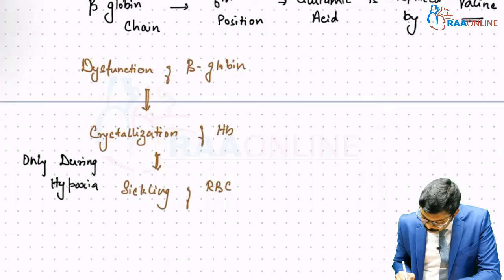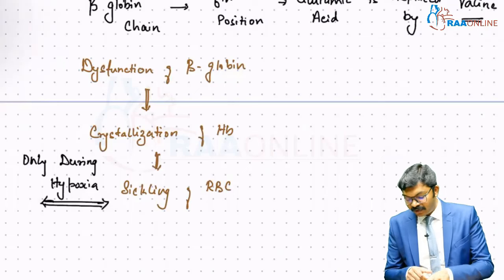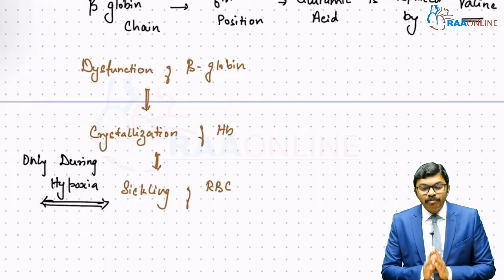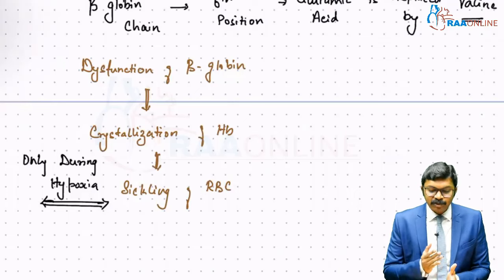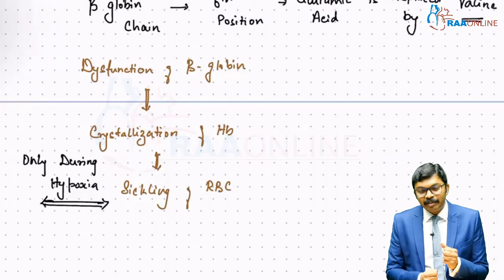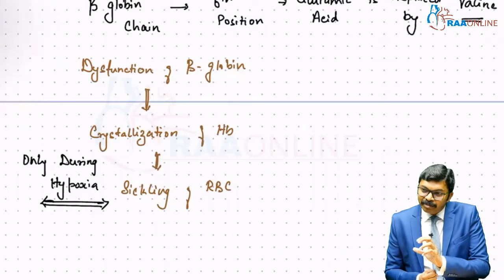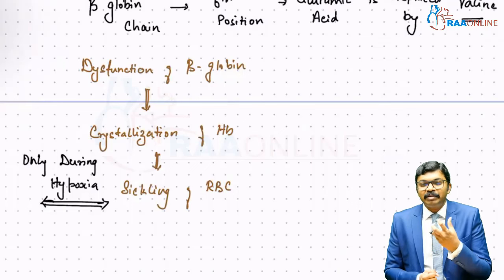The behavior of beta globin chain is such that during the presence of oxygen, even though beta globin chains have valine, they don't misfunction. But in the absence of oxygen, whenever there is hypoxia, the hemoglobin behaves very differently and becomes crystallized.